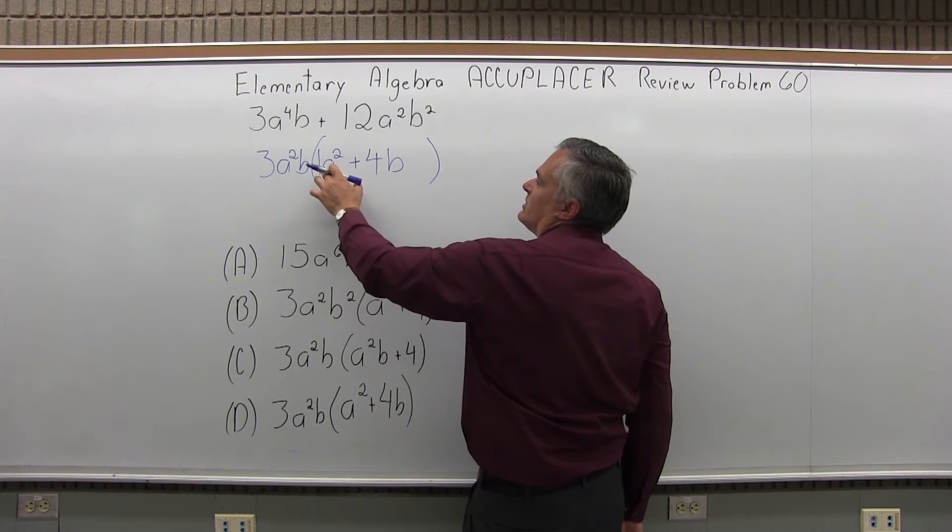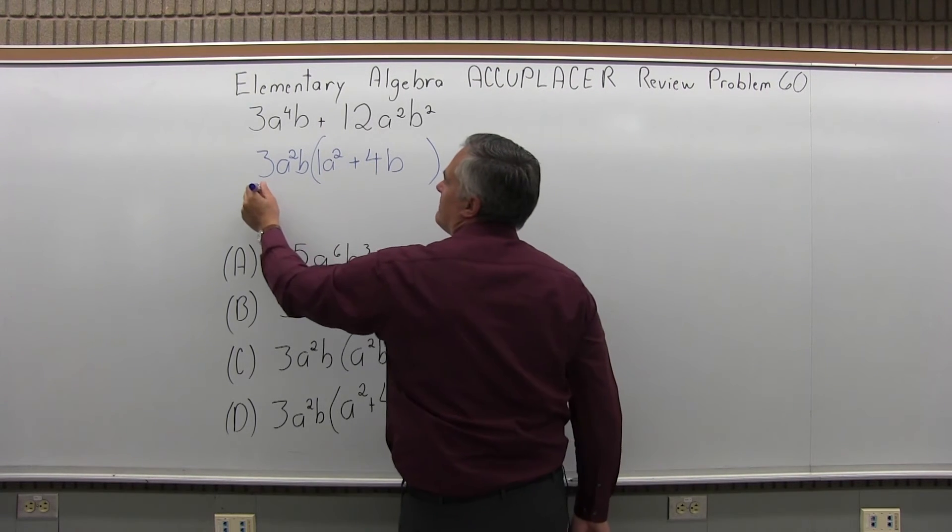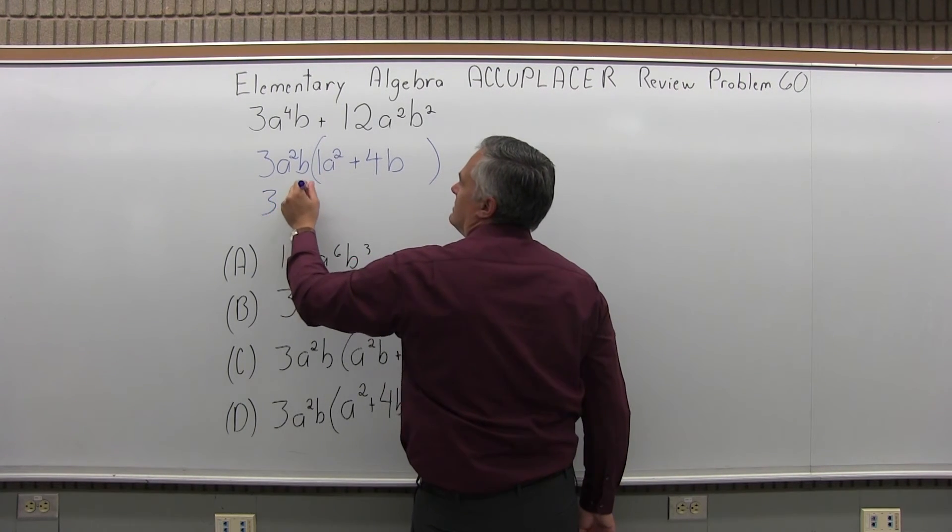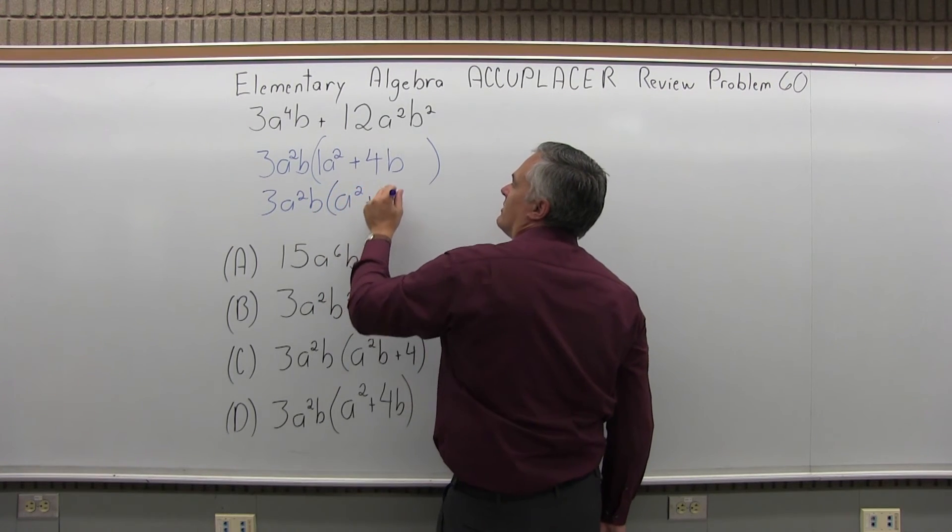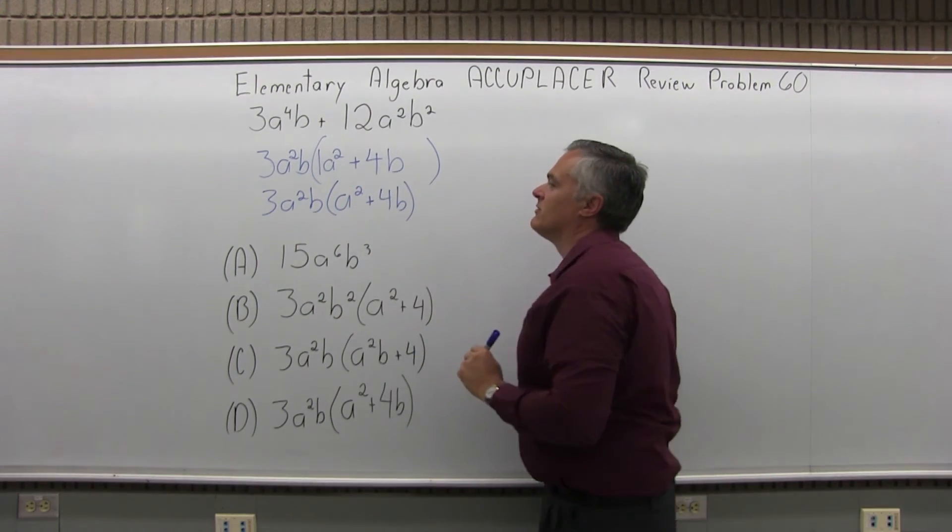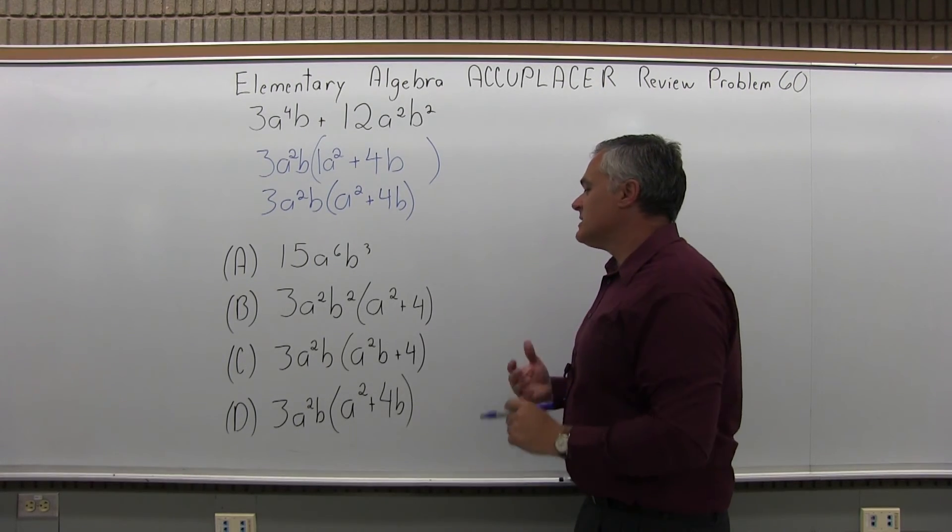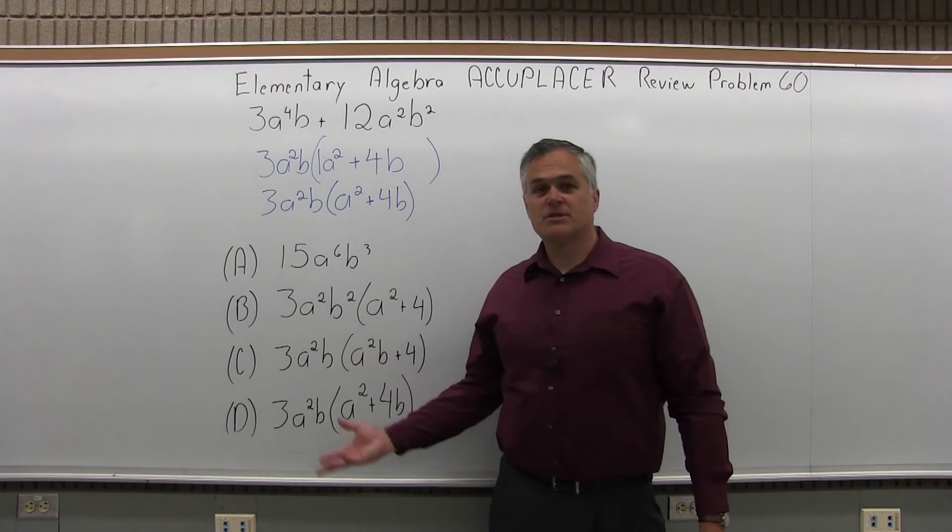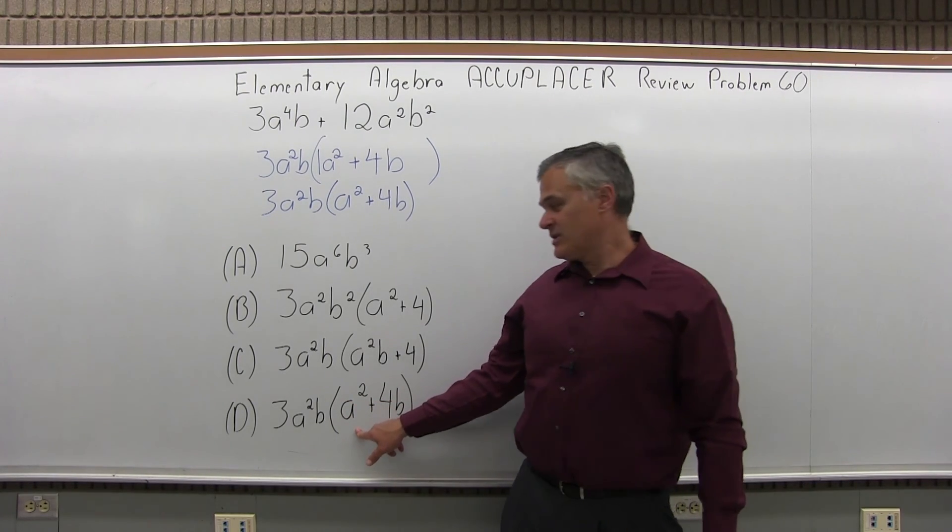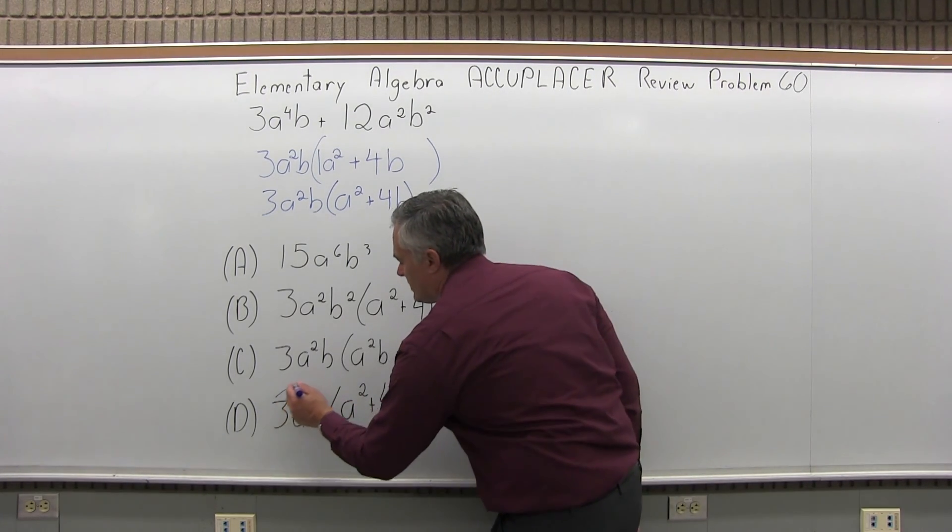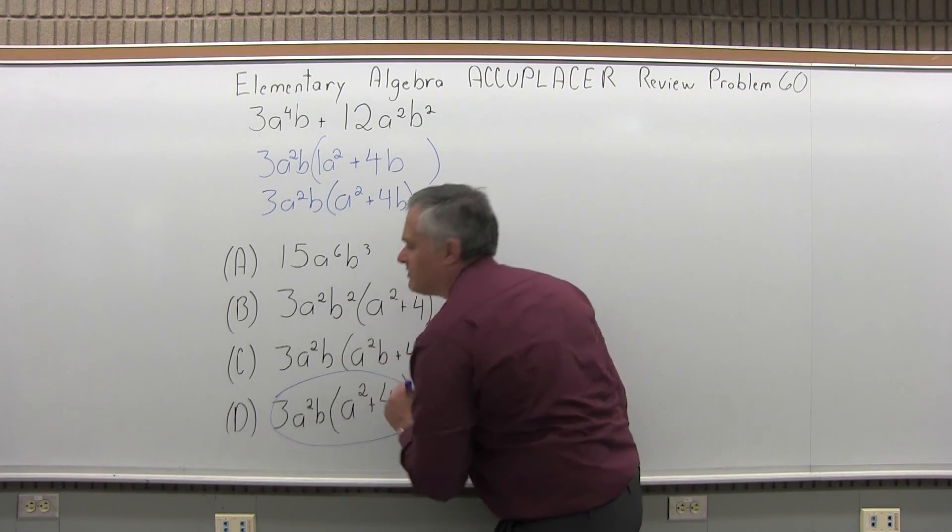So I have it written in the parentheses 1A squared plus 4B. I don't really need the one. So let me write it A squared plus 4B in the parentheses. And the 3A squared B in front will stay in front. Now, does this match with one of my four options that are given? Yes, it does. Option D is a perfect match. So the answer for number 60 is Option D.